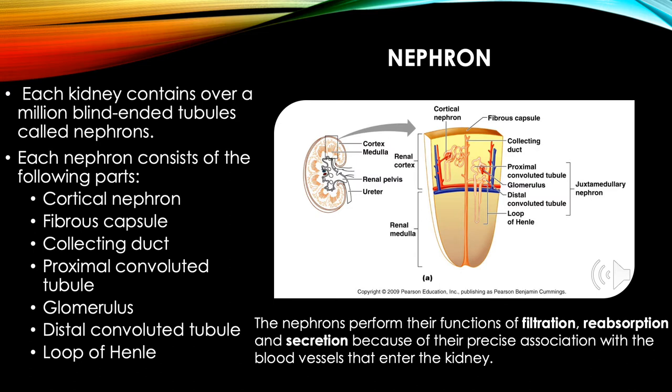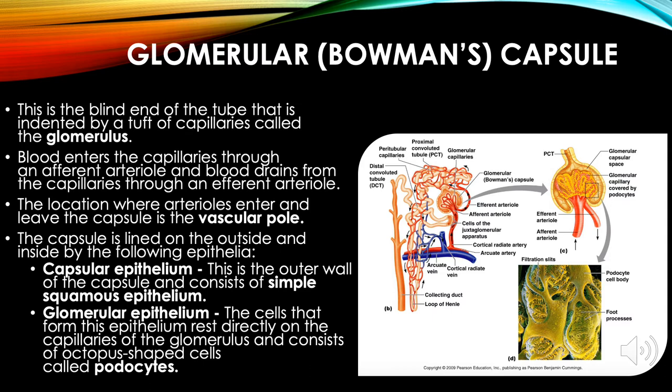Each nephron consists of the following parts: cortical nephron, fibrous capsule, collecting duct, proximal convoluted tubule, glomerulus, distal convoluted tubule, and loop of Henle. The nephrons perform filtration, reabsorption, and secretion because of their precise association with the blood vessels that enter the kidney.